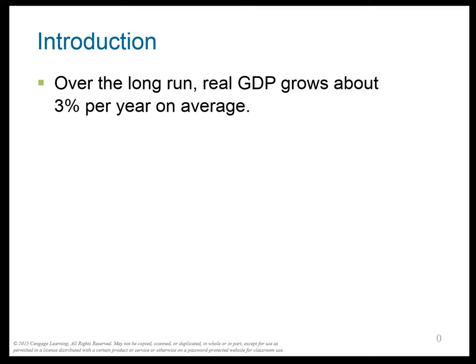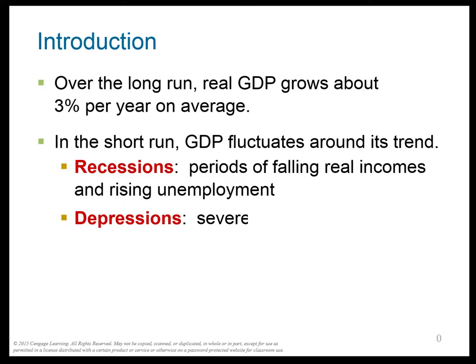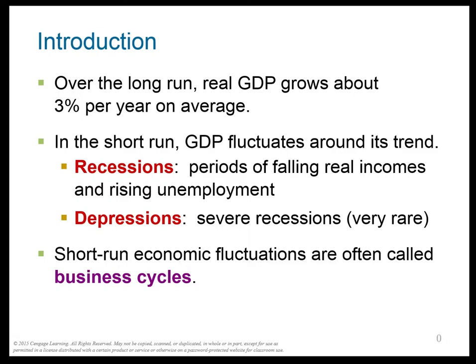What we're going to talk about is the short run and how things change in the short run in the macro economy. In the long run, real GDP grows about 3% per year on average. However, in the short run, the GDP goes kind of up and down around this long run trend. When the GDP goes down, it's called recessions. Really bad recessions are called depressions. And the up and down nature of the GDP is called a business cycle.